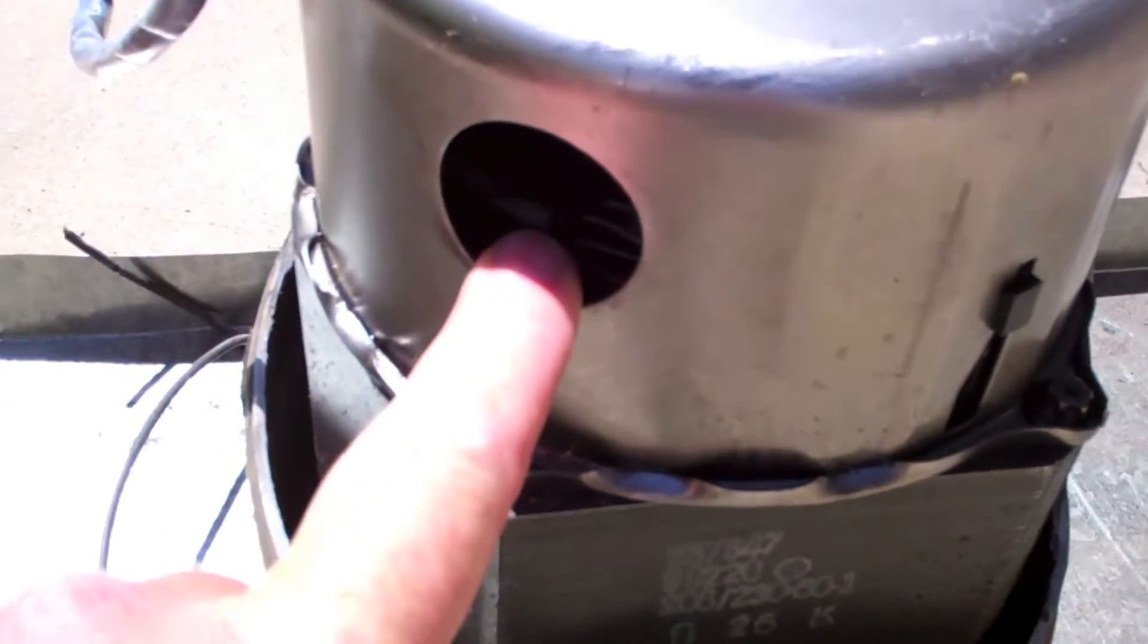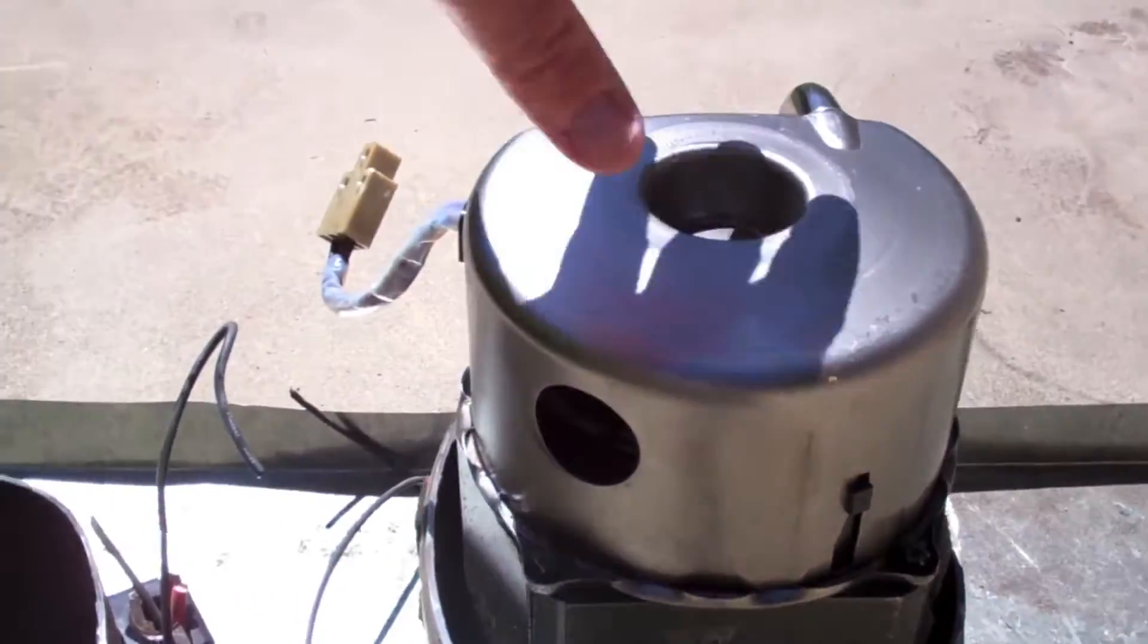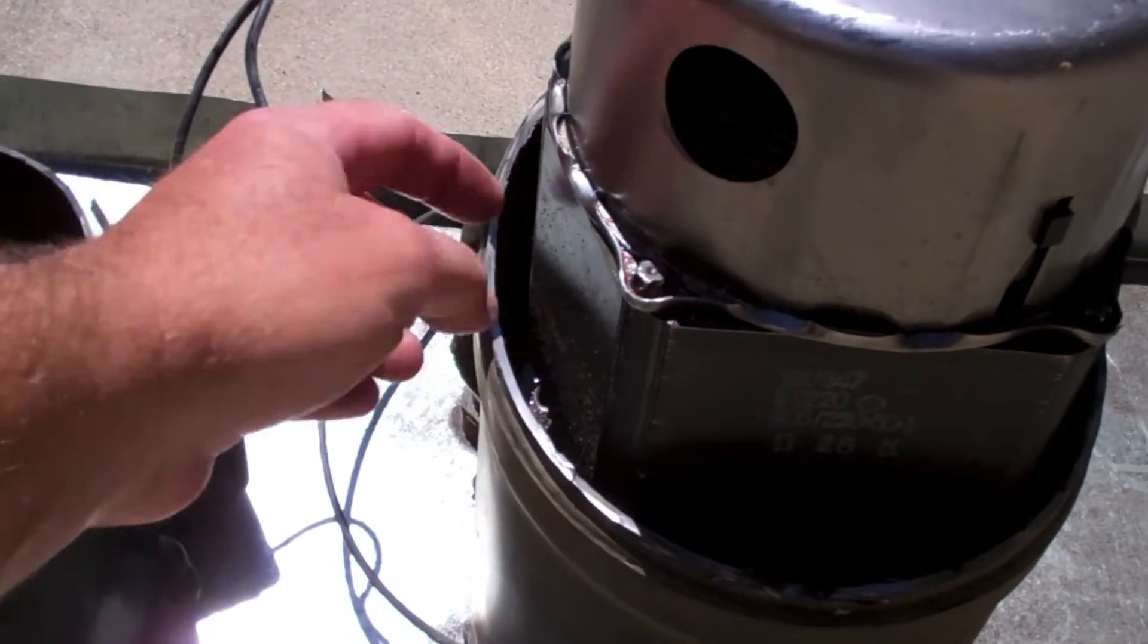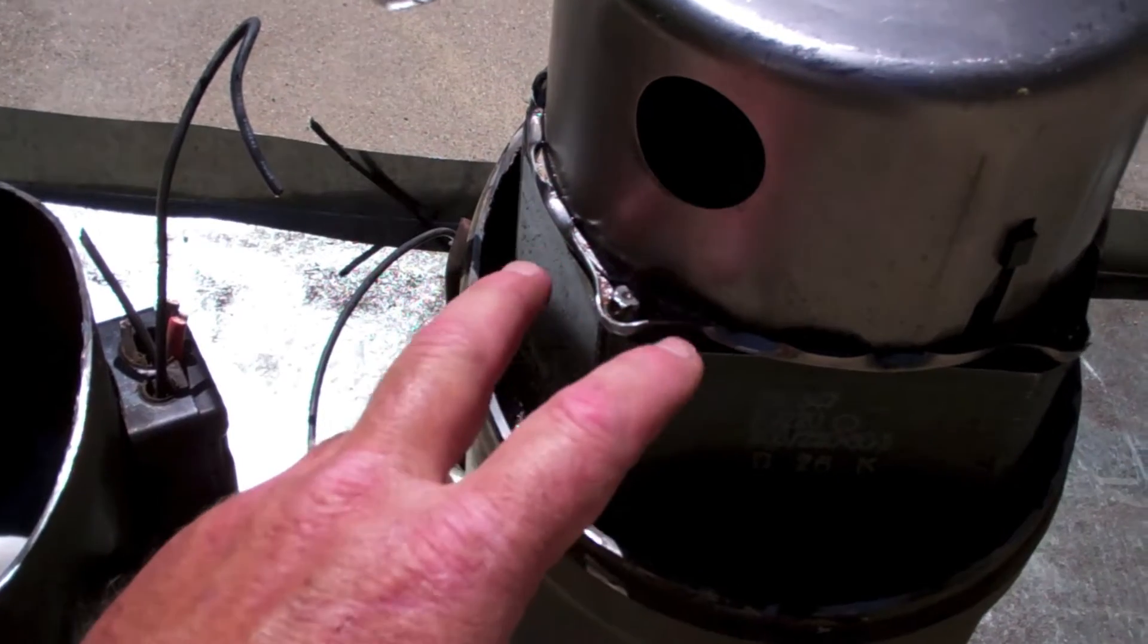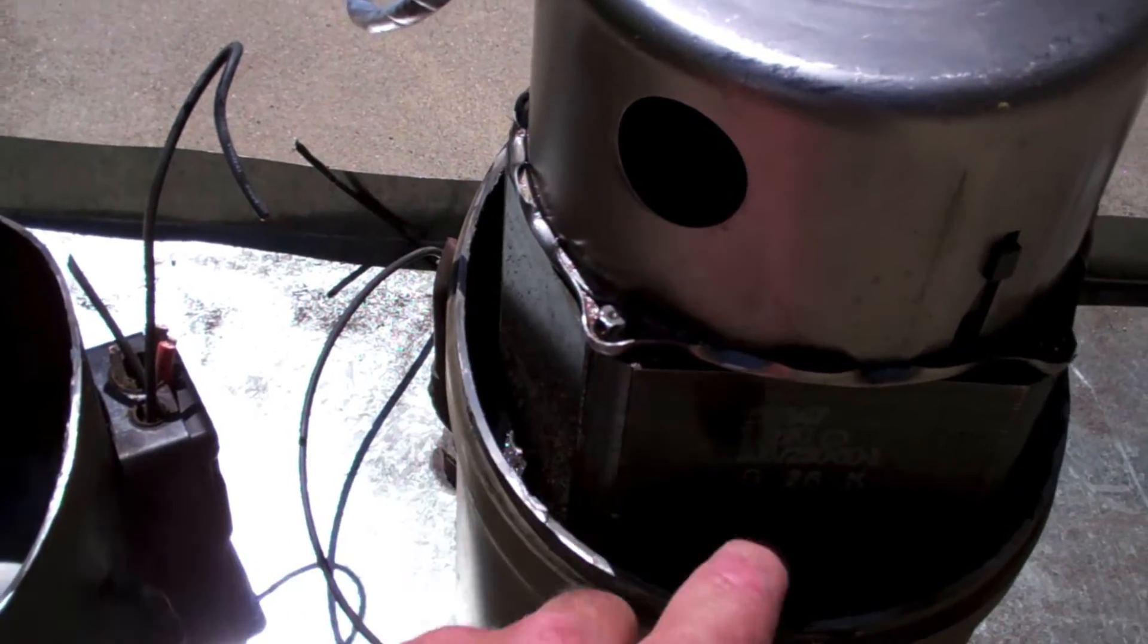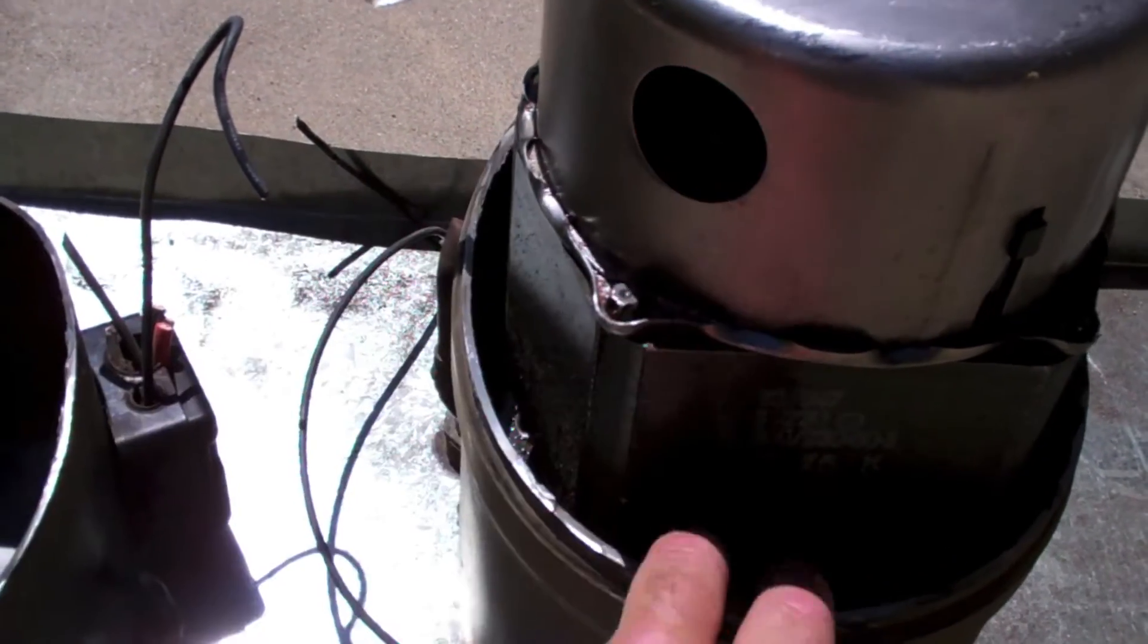But the suction gas goes in here. So this would be considered the suction side. Some of the refrigerant drops in the bottom to keep the windings cool because you've got windings here and you've got windings down at the bottom.